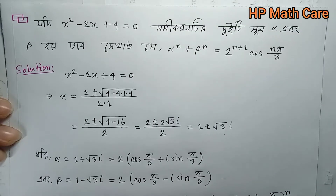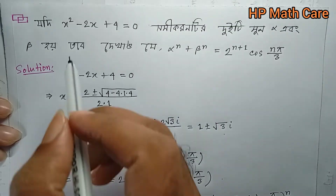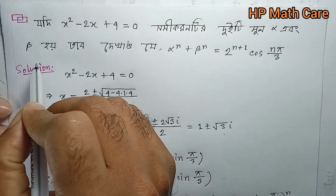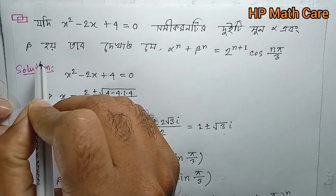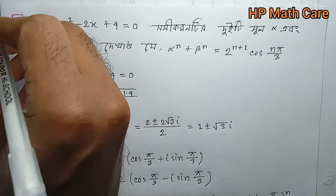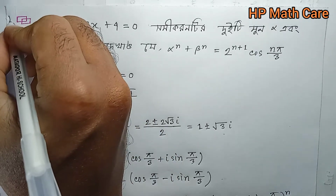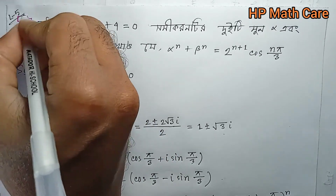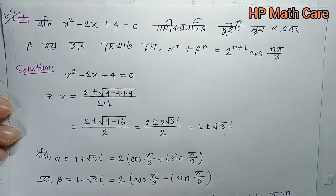This video will show De Moivre's theorem. This math relation involves number 5. This is the next number — number 5 — this is the number of math.